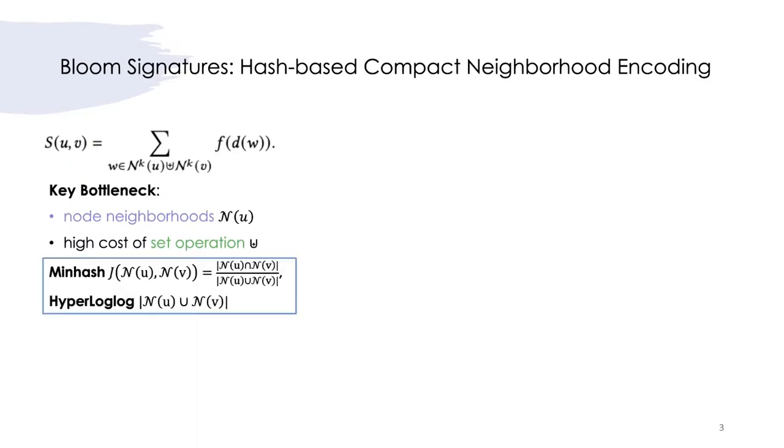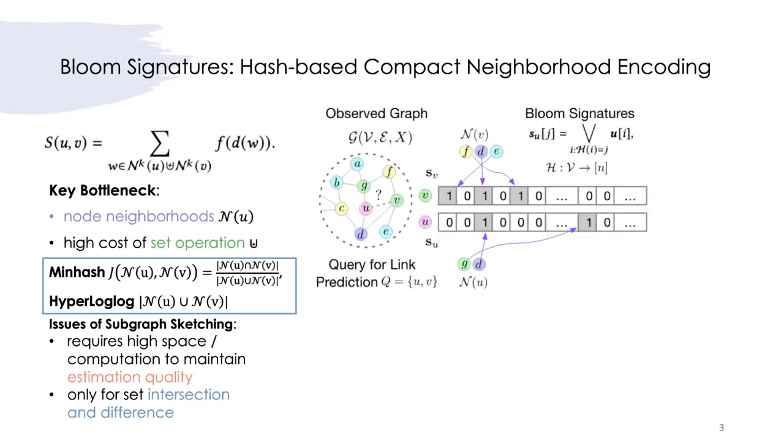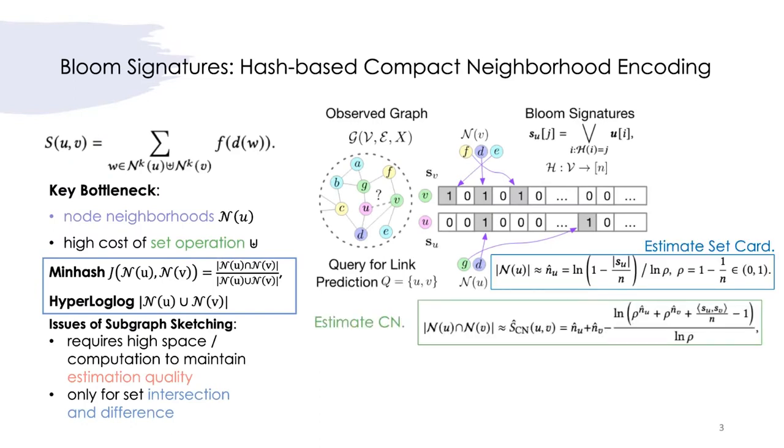Prior works such as subgraph sketching uses minhash and hyperloglog to estimate heuristics, but they require high space or computation to maintain estimation quality, and can only be used to estimate set intersection and difference-based heuristics. On the other hand, our proposed signature projects a node neighborhood to a compact bit array via a random hash function to minimize collisions. Bloom's signature can estimate any heuristics, such as set cardinality and common neighbors, with provably low errors.